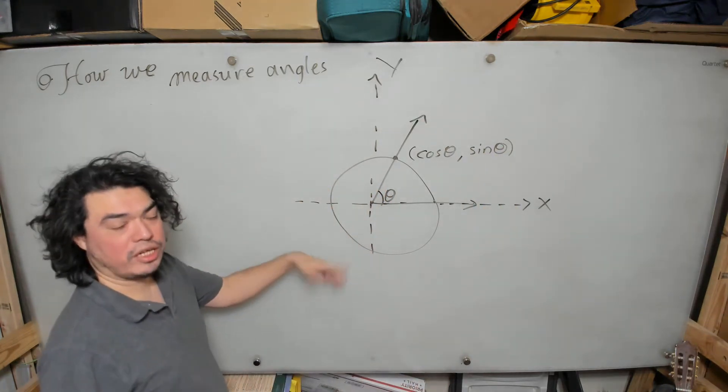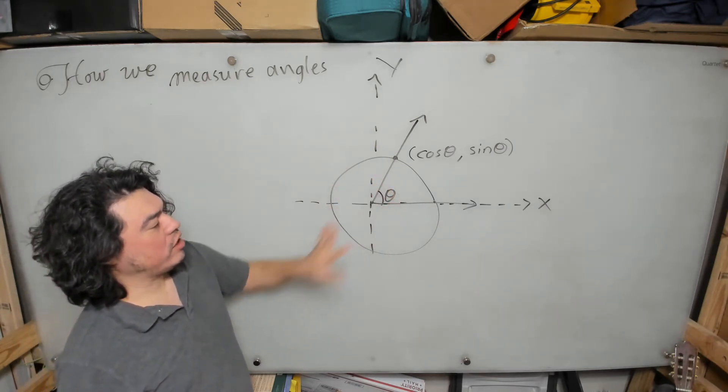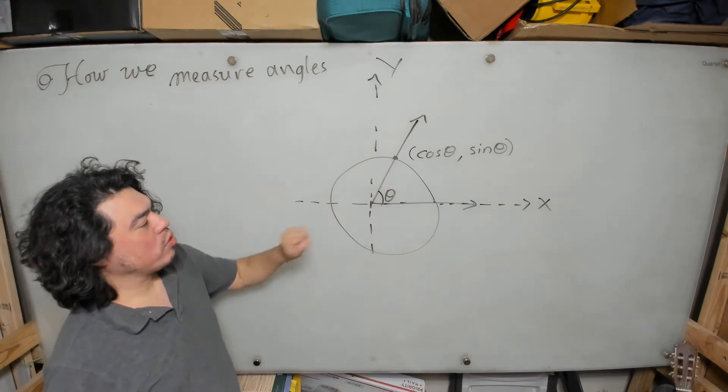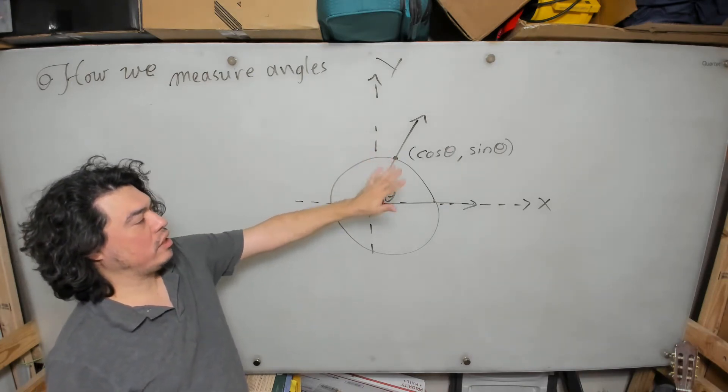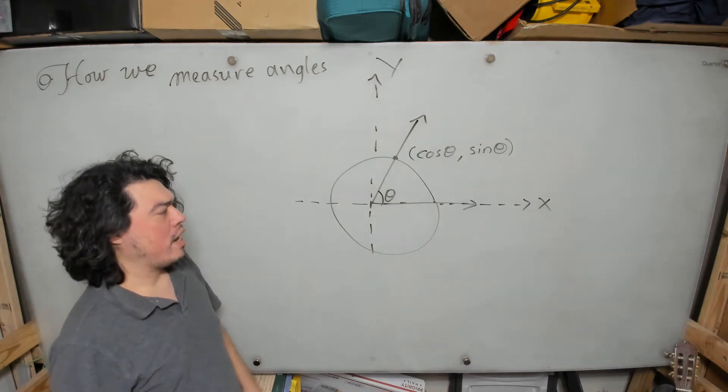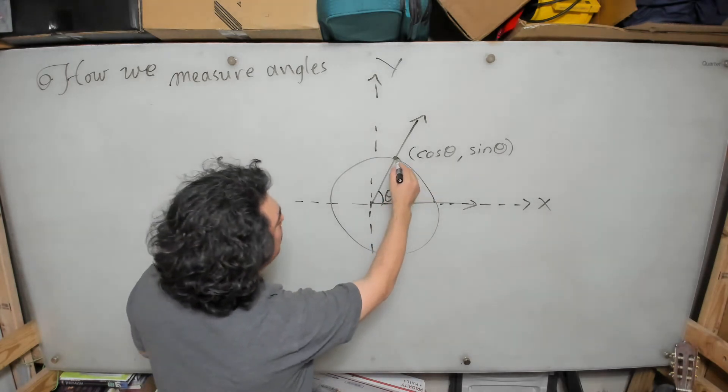So we know that the x-coordinate is the cosine of theta, the sine of theta is the y-coordinate of this intersection point. Again, this is a unit circle—that is to say, a circle of unit radius. We have the angle in standard position, and so the intersection point: the x-coordinate is the cosine of theta, the y-coordinate is the sine of theta.